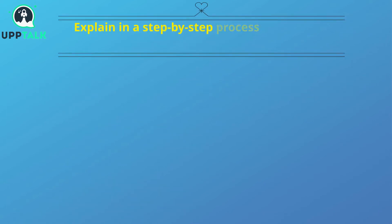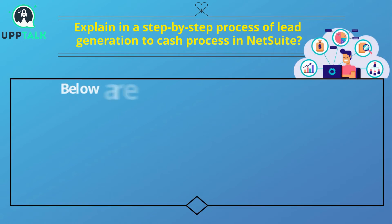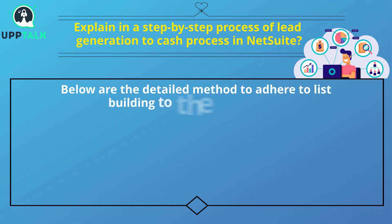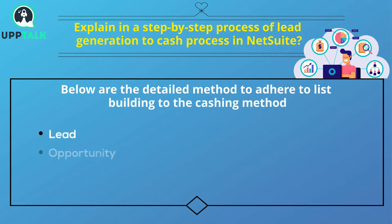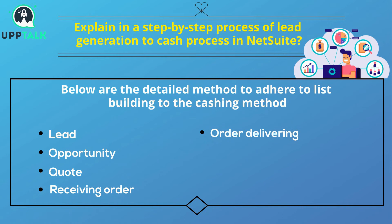Explain the step-by-step process of lead generation to close process in NetSuite. The detailed steps of the lead-to-close method are: Lead, Opportunity, Quote, Sales Order, Delivering, Invoice, Billing.